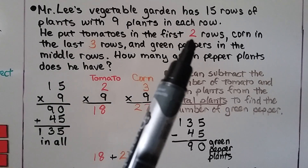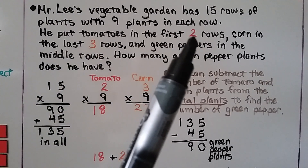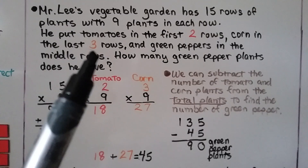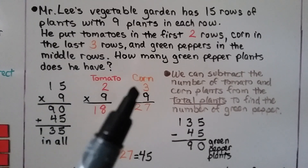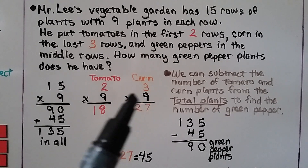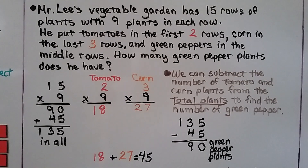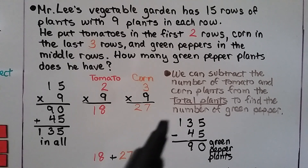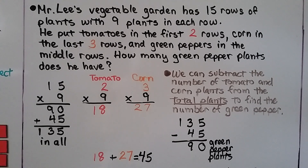We know there are tomatoes in the first two rows — two rows of nine — so two times nine is eighteen tomato plants. And there's corn in the last three rows with nine in each row, so three times nine is twenty-seven corn plants. We add eighteen plus twenty-seven, which equals forty-five. We subtract one hundred thirty-five minus the forty-five corn and tomato plants, and find that he has 90 green pepper plants.